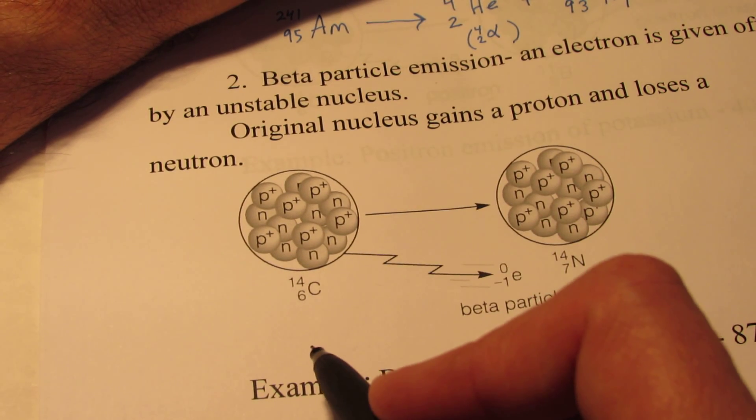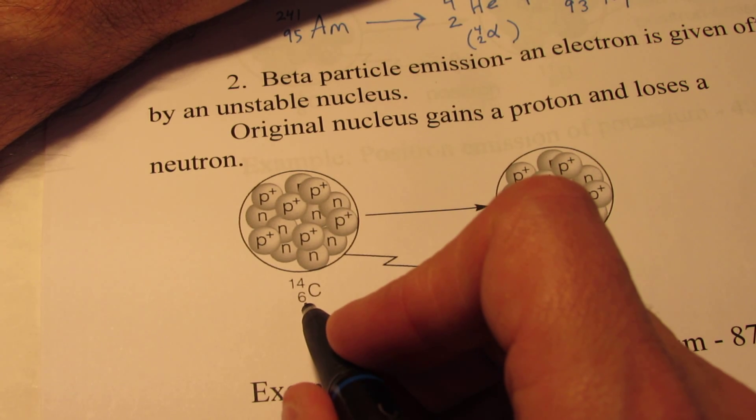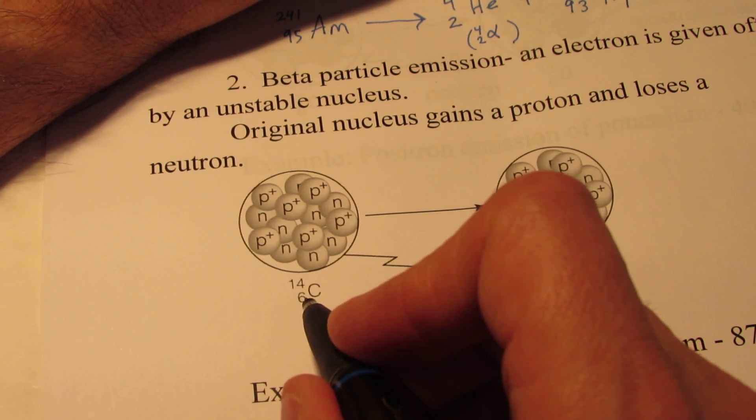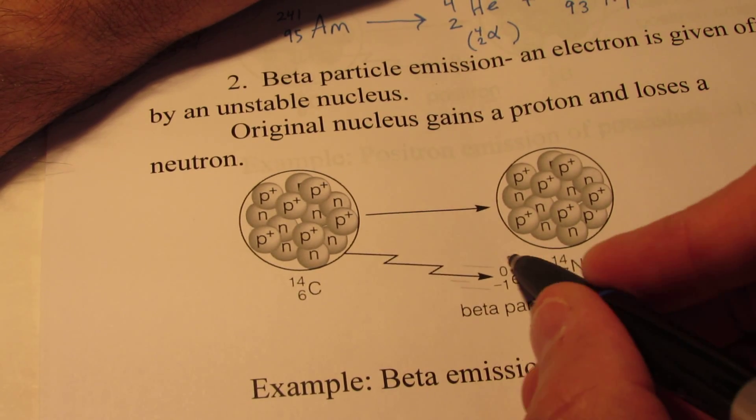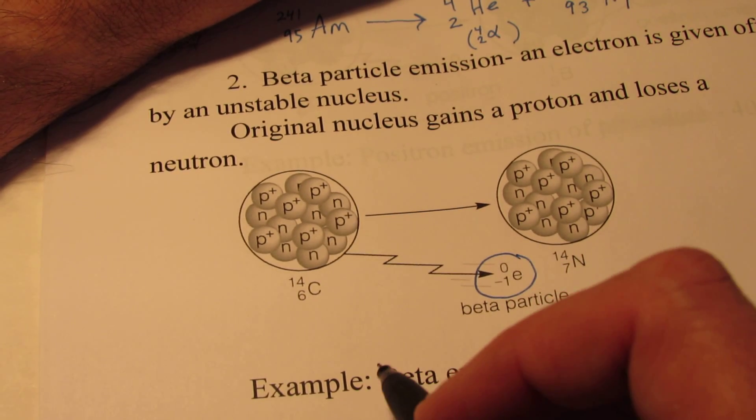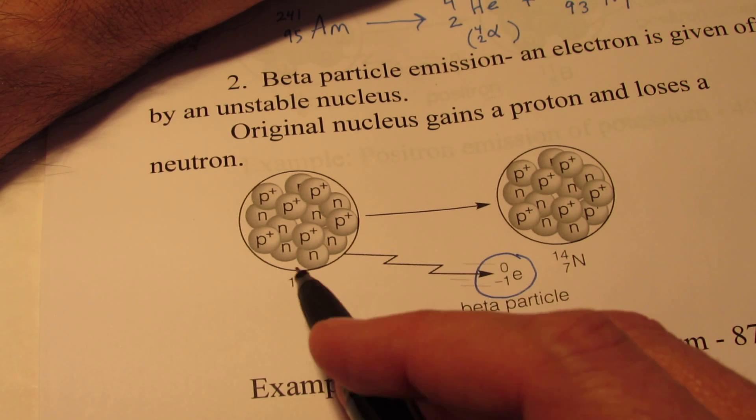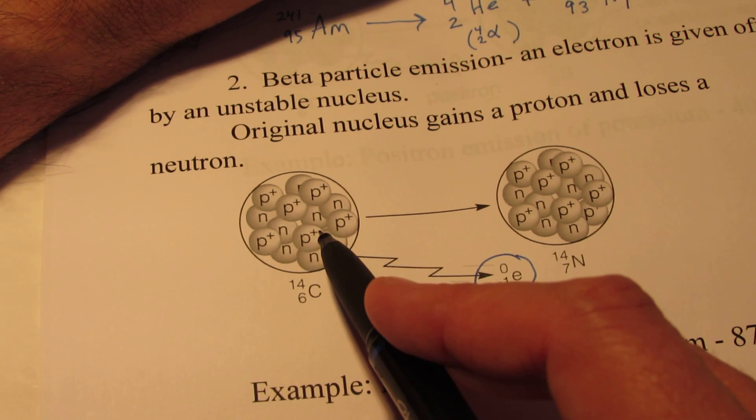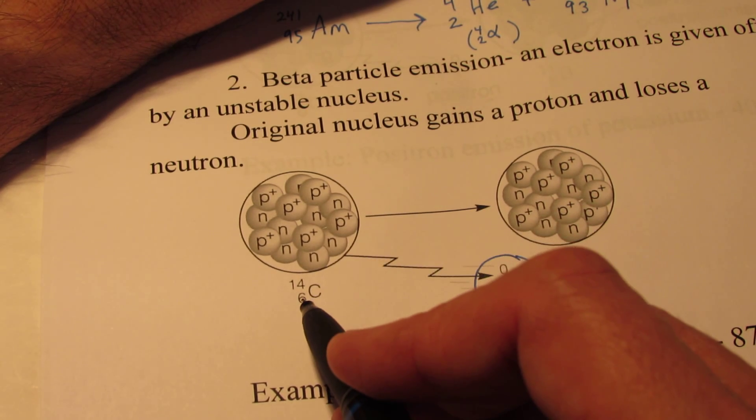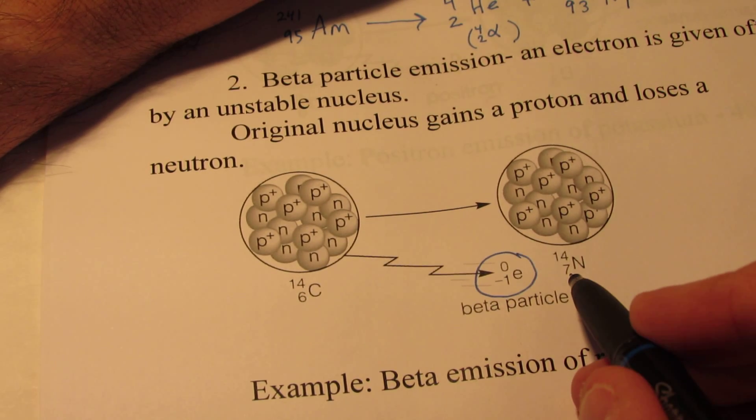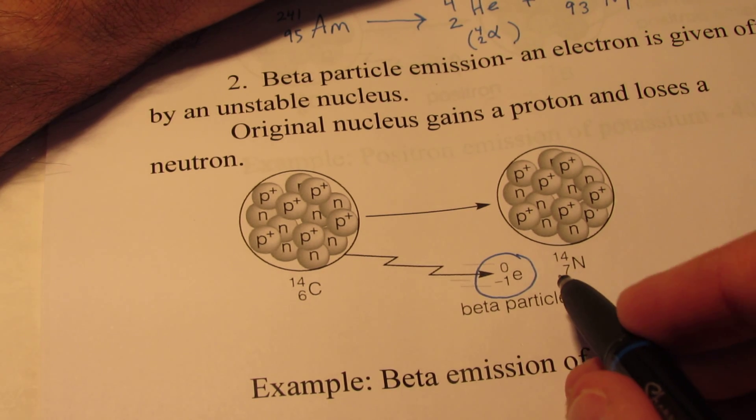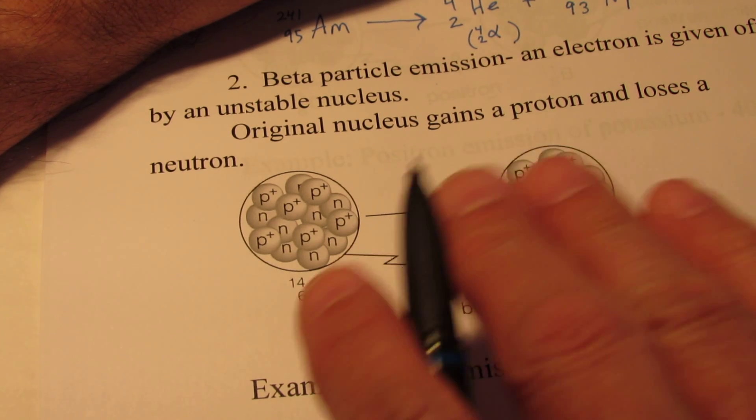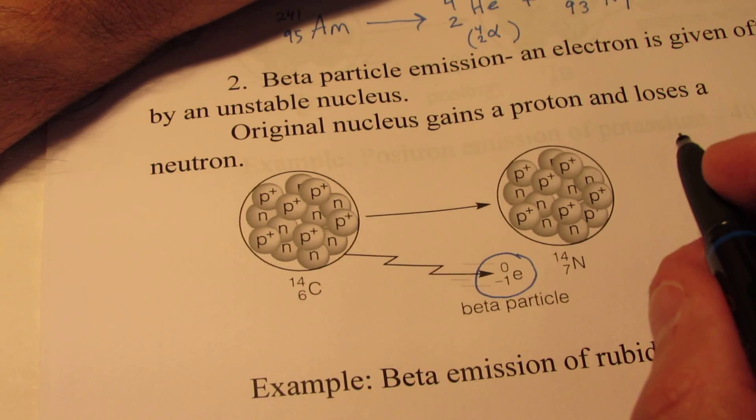So in the process, that neutron loses a negative charge and becomes a proton. Let me clear that up. Let's take carbon-14 for example. Carbon-14 has 6 protons and it has 8 neutrons. That's where the mass of 14 comes from. If it ejects a beta particle, that means that one of the neutrons in here has transmutated or turned into a proton. So the atomic number goes up by 1. We've gained a proton.